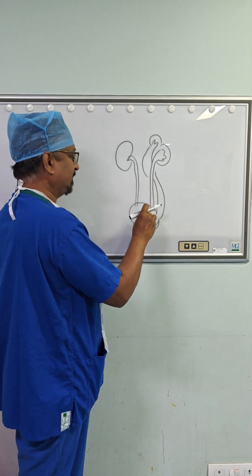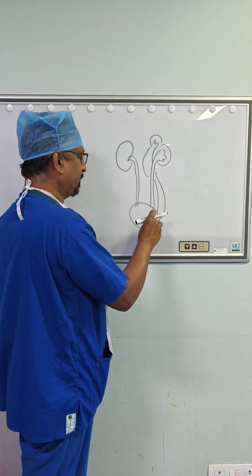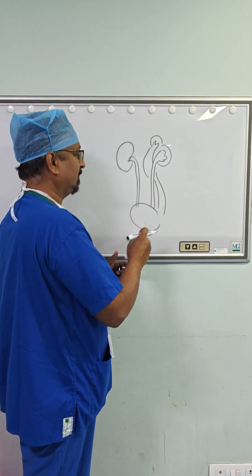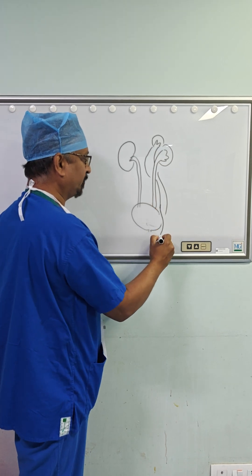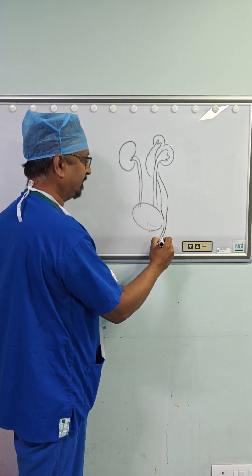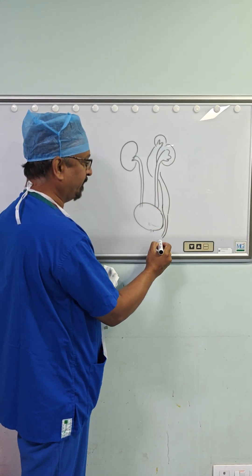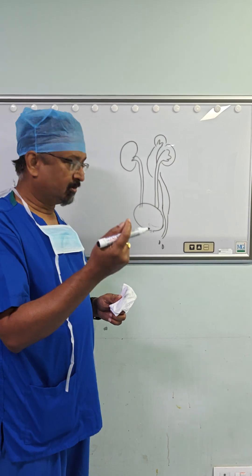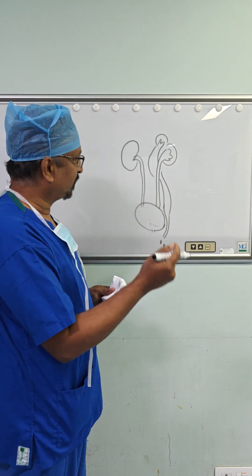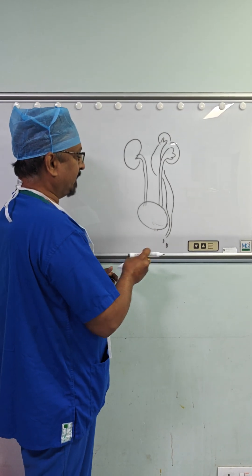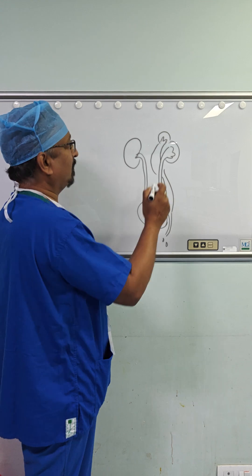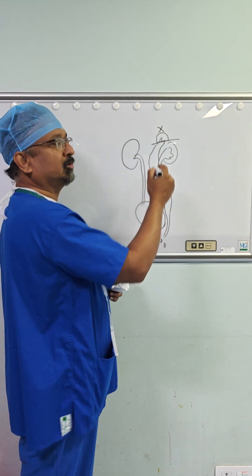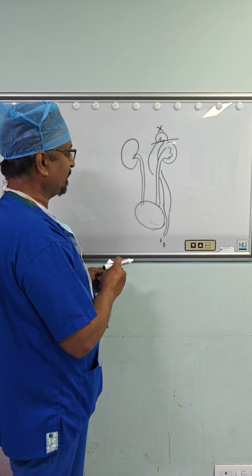Sometimes, what happens is the ureter itself does not open into the bladder, but opens outside the bladder. This is particularly a problem in girls, where they keep on passing drops of urine. Usually, this part of the kidney is not functioning, so we have to remove it.